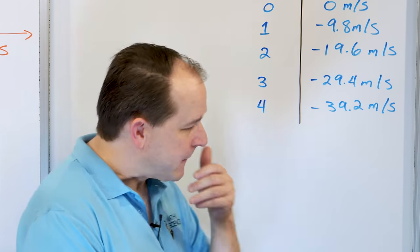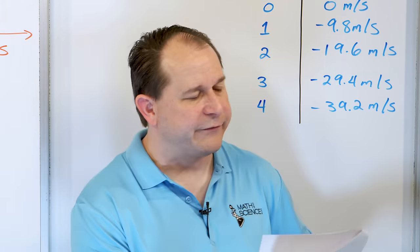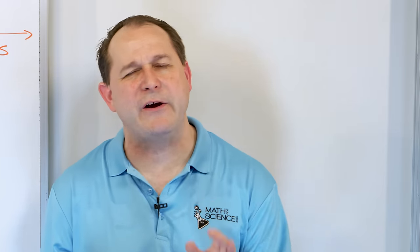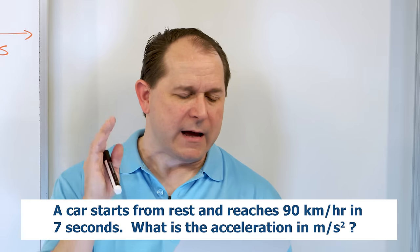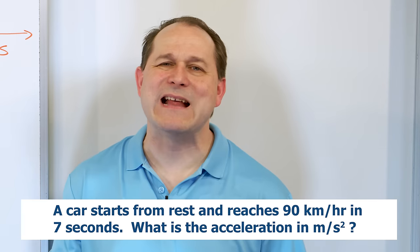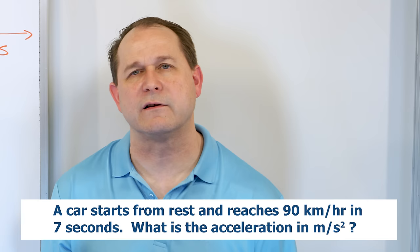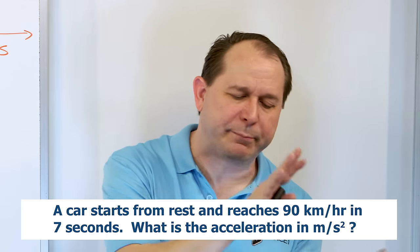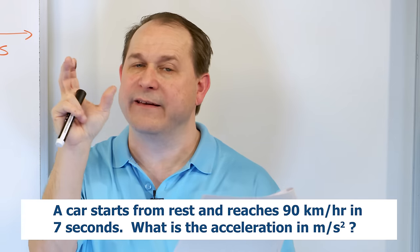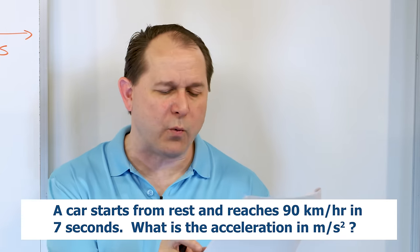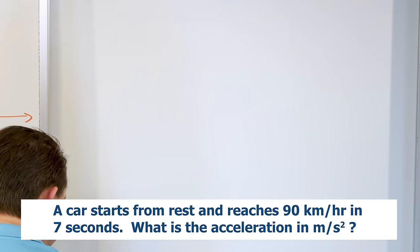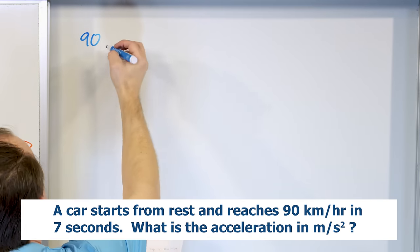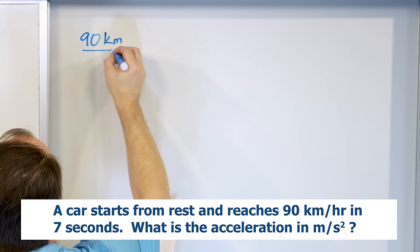Now let's do one or two quick calculations, very simple, just to give you a feel for how to calculate acceleration. A car starts from rest and reaches 90 kilometers per hour in 7 seconds. What is the acceleration in meters per second squared? We have an immediate problem: we need to turn 90 kilometers per hour into meters per second. So we put 90 kilometers on top and hours on the bottom, and do it step by step. The conversion: 1 kilometer equals 1,000 meters, so kilometers cancel. Then 1 hour is 60 minutes — hours cancel. Then 1 minute is 60 seconds — minutes cancel. Now I have meters per second.